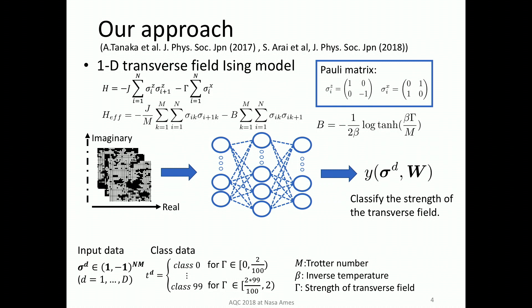We treat a one-dimensional transverse field Ising model. This is the Hamiltonian. J is the interaction spin-to-spin. Sigma_IZ and Sigma_IX are Pauli matrices. And gamma is the strength of the transverse field. We prepare the spin configurations and have performed the Suzuki-Trotter decomposition, so we can obtain the effective Hamiltonian. M is the Trotter number. We prepare the dataset using the quantum Monte Carlo method. And the neural network predicts the strength of the transverse field from spin configurations.